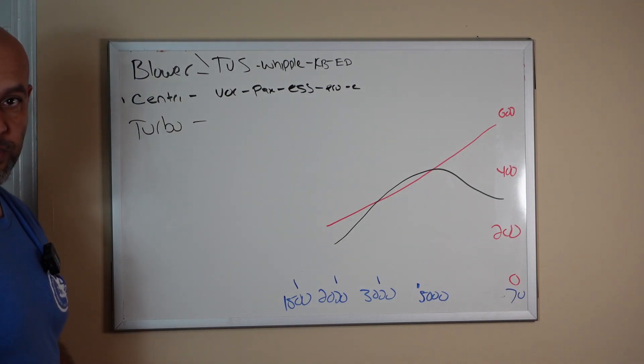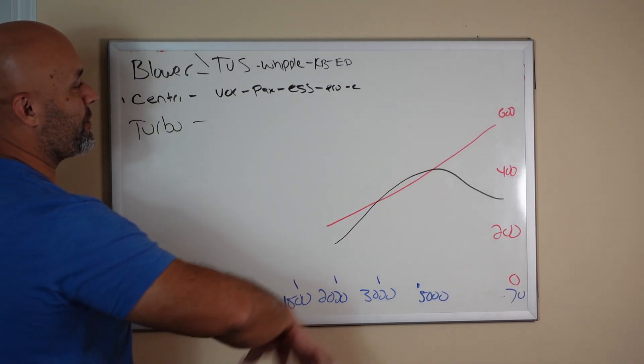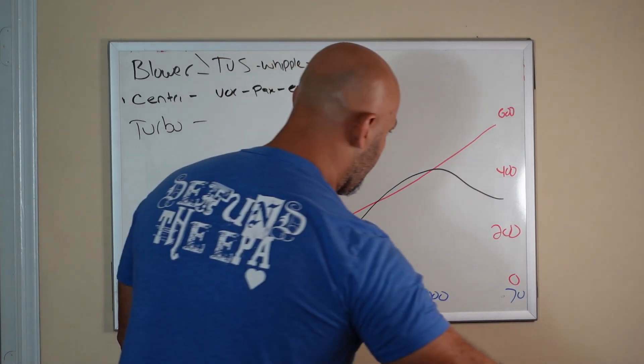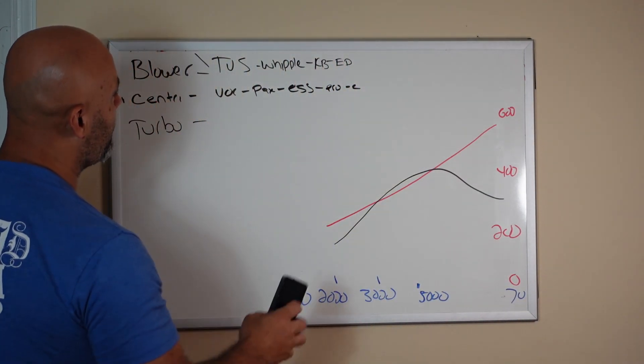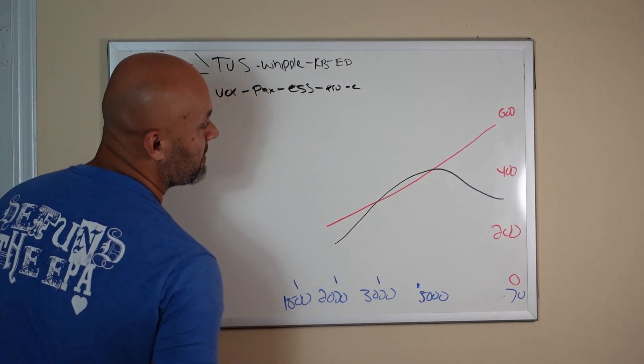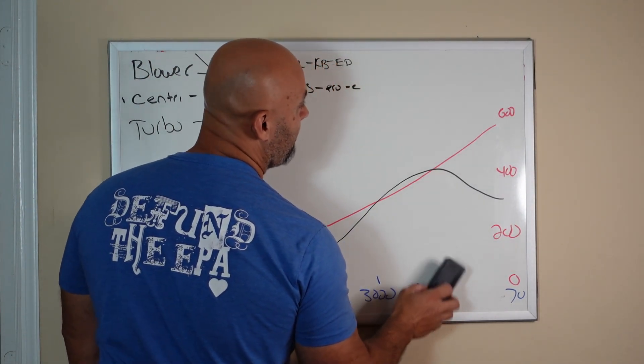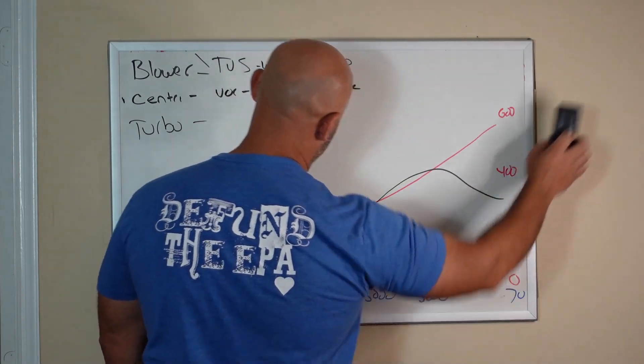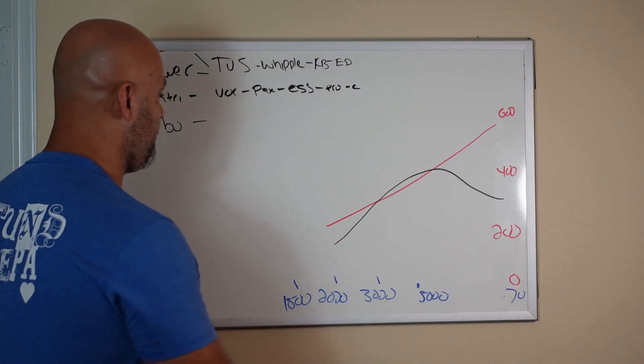Well, it will at really high RPM if it's a centrifugal supercharger. So this is what a centrifugal supercharger generally does when it comes to power delivery: high RPM, low torque at low RPM, feels really good above 5000 and really, really good above 6000, it really feels nice.